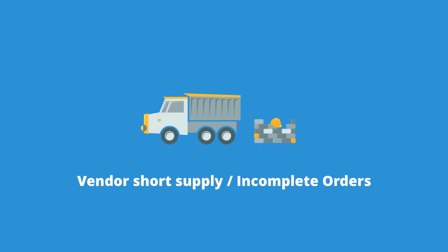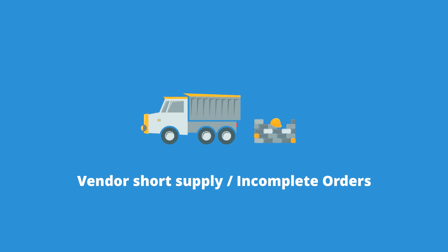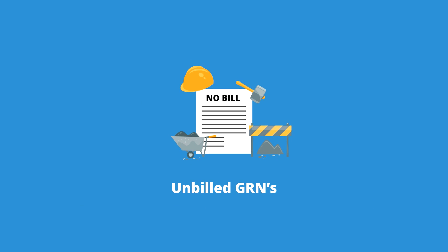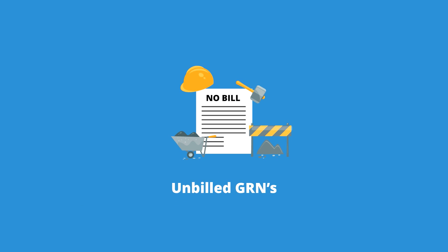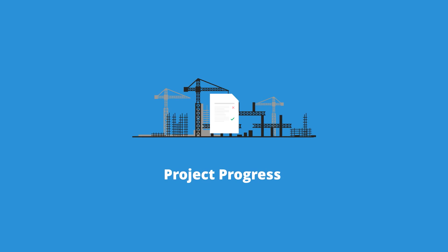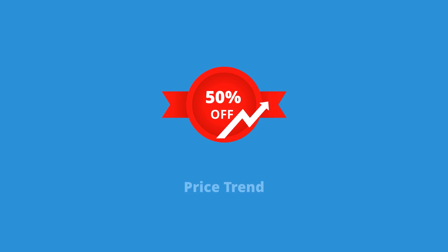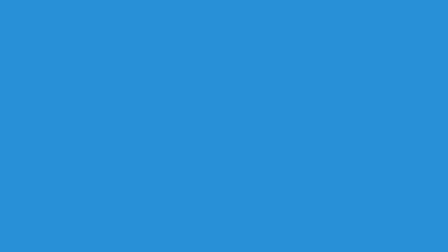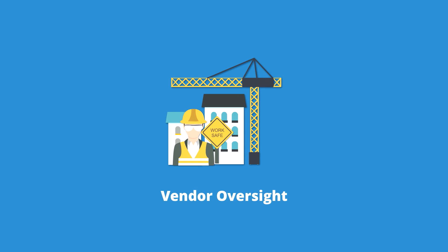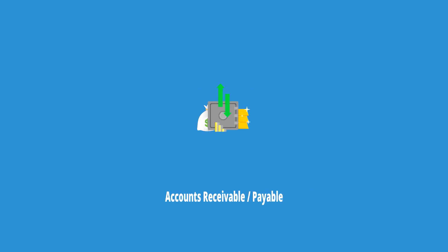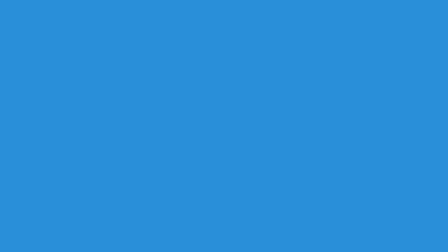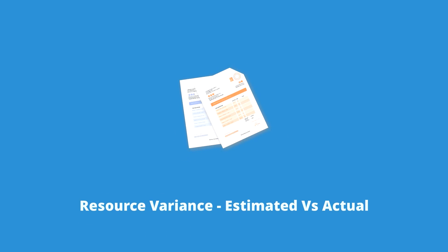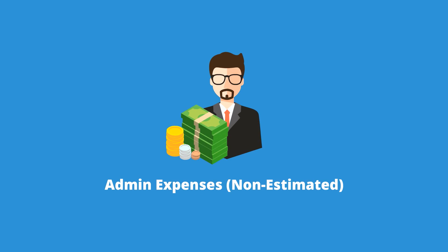Business Intelligence reporting includes: Project Cost Variance, Vendor Short Supply, Incomplete Orders, Unbilled GRNs, Project Progress, Price Trend, Balance Estimate, Cash Flow, Transactional Reporting, Profit Ratio, Vendor Oversight, Accounts Receivable and Payable, Resource Variance (Estimated vs Actual), and Admin Expenses.